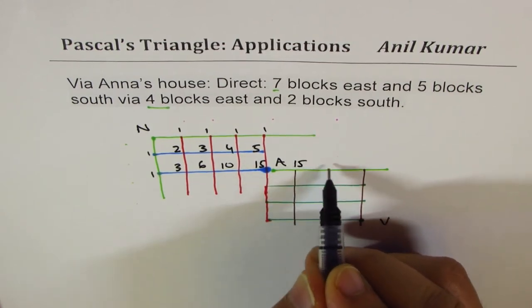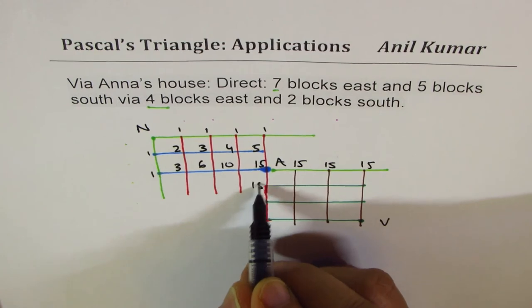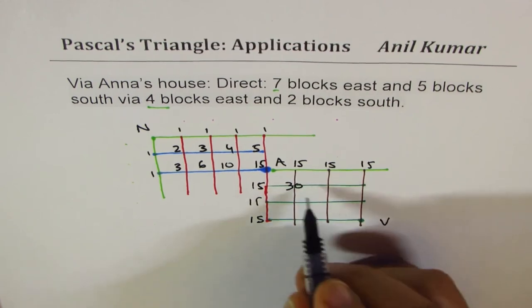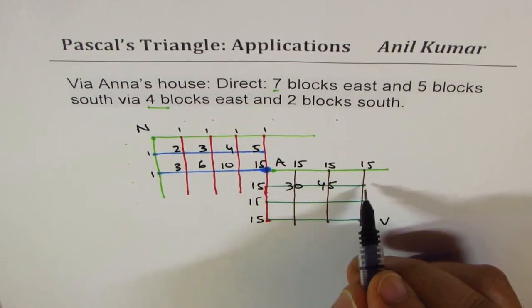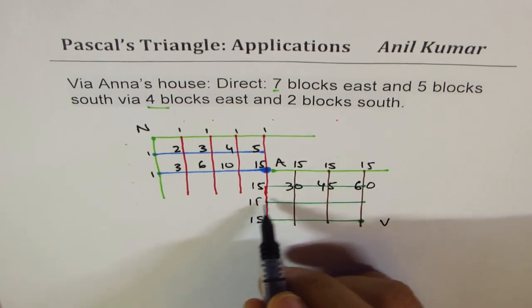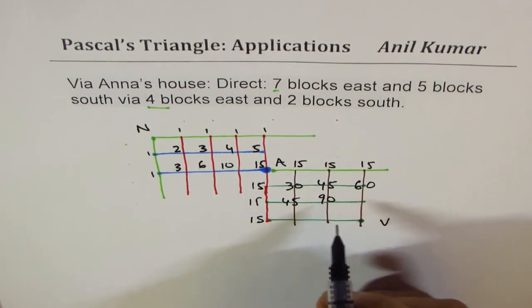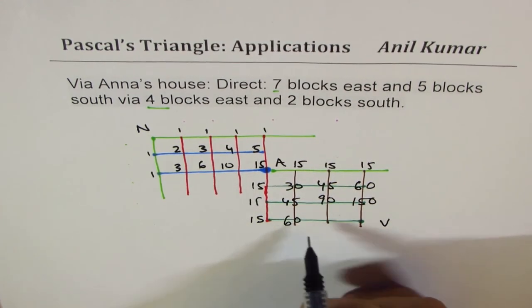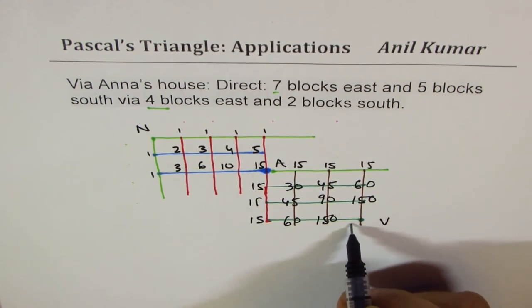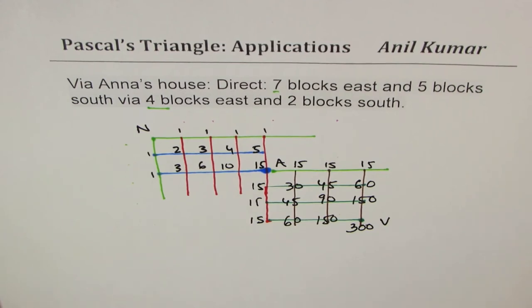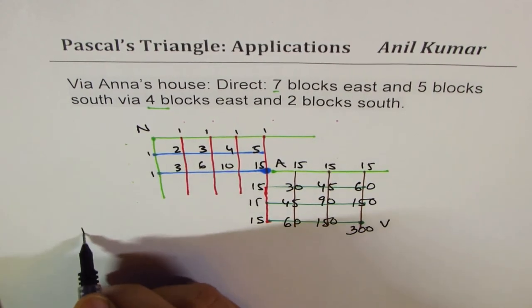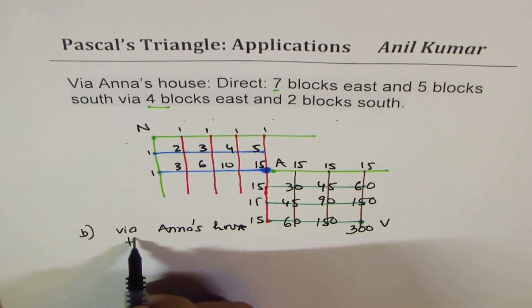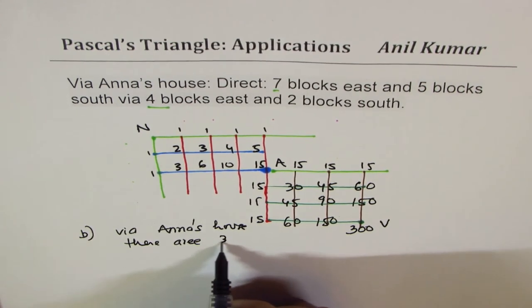From here, going east will be fifteen each. South will also be fifteen. So now you add them. Fifteen and fifteen is thirty, thirty and fifteen is forty-five. When you add fifteen, you get sixty. Forty-five plus forty-five is ninety, and this is hundred and fifty. When you add this, you get sixty, hundred and fifty, and when you add hundred and fifty, you get three hundred. So now there are three hundred ways of going. So in part B, via Anna's house, there are three hundred ways.